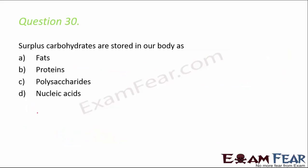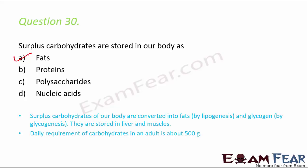Question number 30: surplus carbohydrates are stored in our body as fats. Whatever excess carbohydrates accumulate in the body are stored as fats — this is why overeating can lead to obesity. This process is called lipogenesis, meaning formation of lipids. They are converted into fats and glycogen and stored in the liver and muscles. The daily requirement of carbohydrates in any adult is about 500 grams.